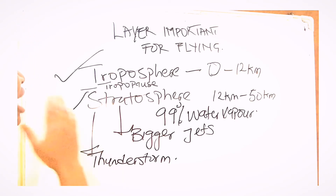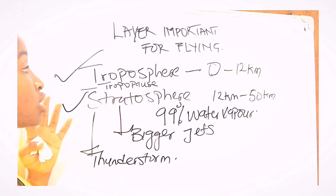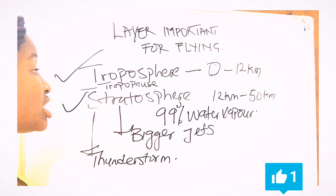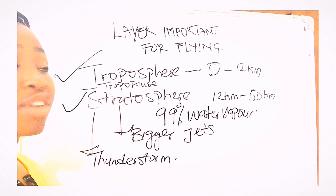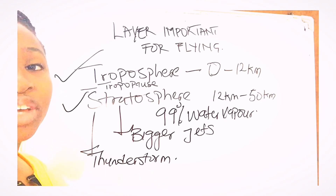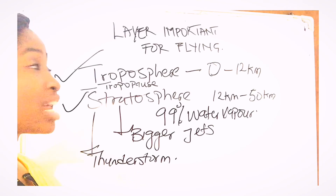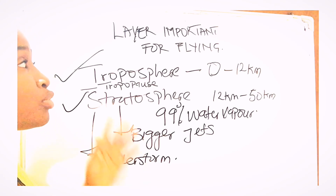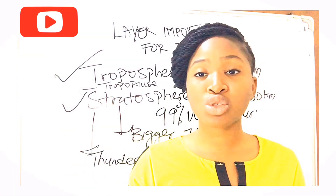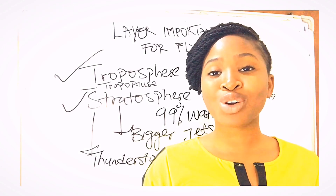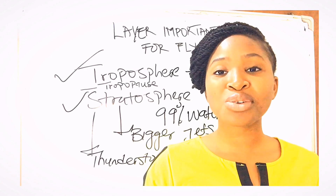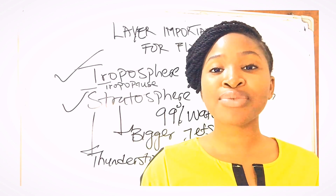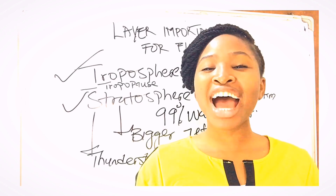Now we can see the layers of the atmosphere and the parts that are important for flying — both smaller, lighter aircraft and bigger aircraft. While you know this, you have the knowledge and you think like an aviator, which is always very important. That's the summary of what we learned today. We'll continue with the meteorology episodes, so stay tuned for episode two of this meteorology series. If you haven't subscribed, make sure you click the subscribe button.